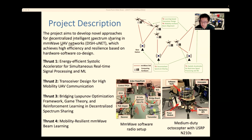The third thrust is to bridge the optimization framework, game theory, and reinforcement learning in decentralized spectrum sharing. We want to design the spectrum sharing scheme using the combination of the FNOW framework boosted by reinforcement learning.